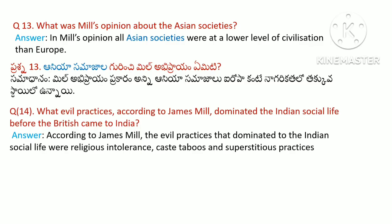What evil practices, according to James Mill, dominated Indian social life before the British came to India? According to James Mill, the evil practices that dominated Indian social life were religious intolerance, caste taboos, and superstitious practices.